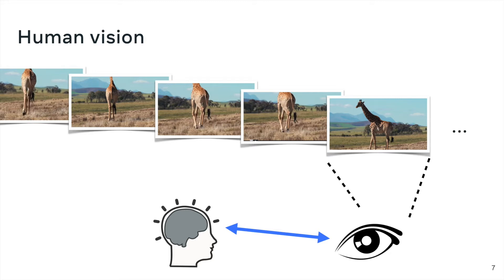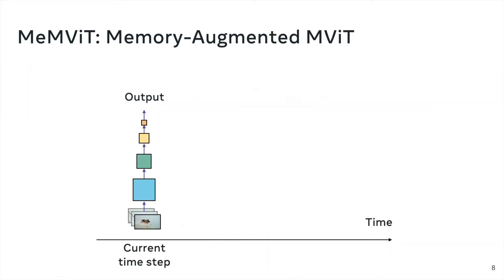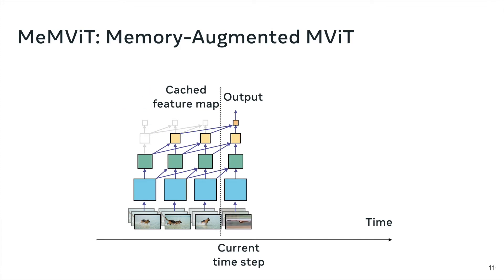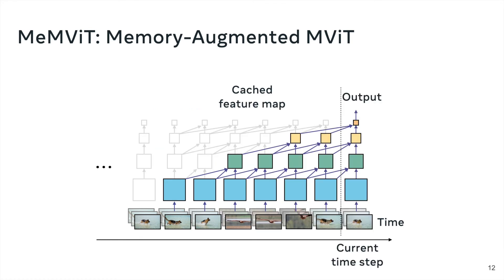We take inspiration from this design and propose MEMVIT, a memory-augmented MVIT for efficient long-term video recognition. Like humans, MEMVIT processes the video sequentially, but additionally caches the feature maps at each iteration as a form of memory, and uses the memory from prior steps as side information for longer-term recognition.